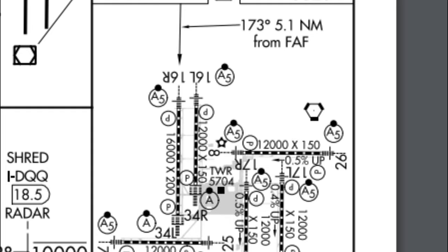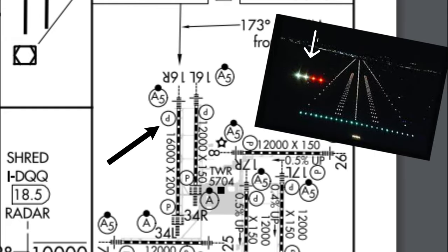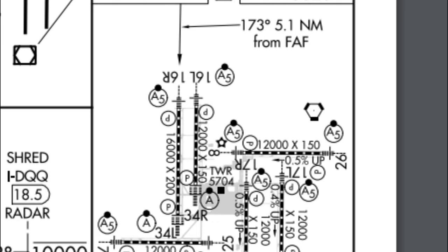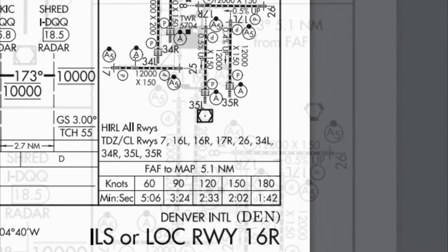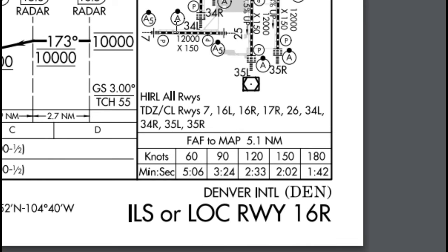Below the A5 you'll see a small P in a circle, indicating there are PAPI lights on the runway located on the right-hand side of the runway. At the bottom it says HIRL all runways, which tells us what lighting is on all the different runways.